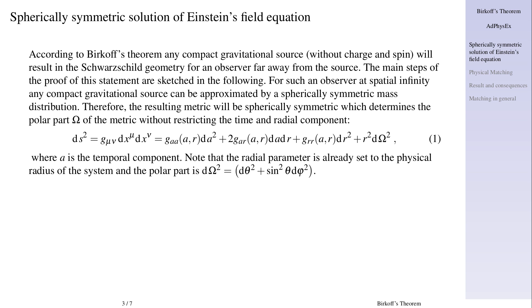Spherically symmetric solution of Einstein's field equation. According to Birkhoff's theorem, any compact gravitational source without charge and spin will result in the Schwarzschild geometry for an observer far away from the source. The main steps of the proof of this statement are sketched in the following. For such an observer at spatial infinity, any compact gravitational source can be approximated by a spherically symmetric mass distribution.